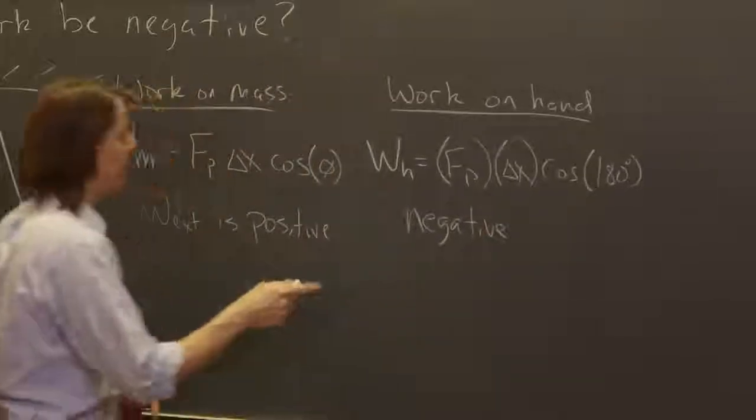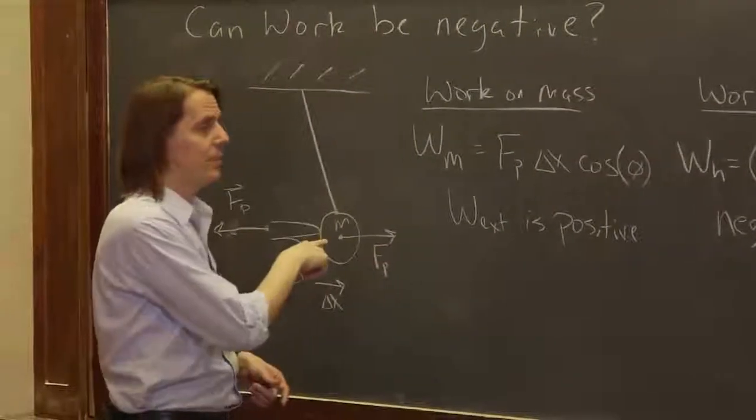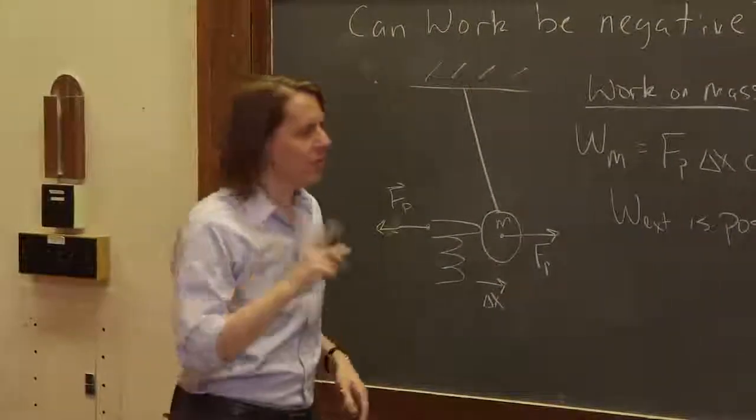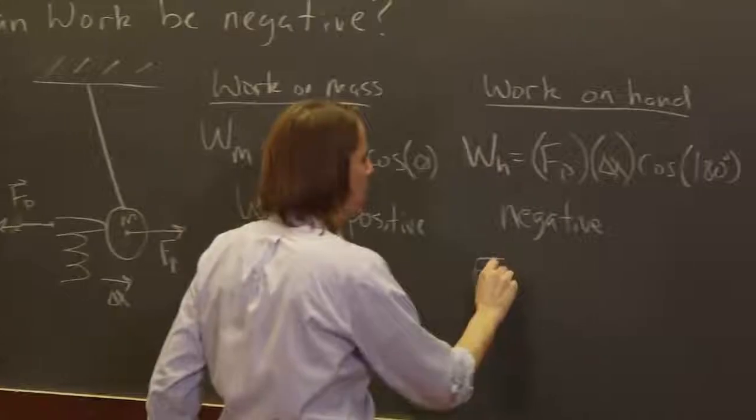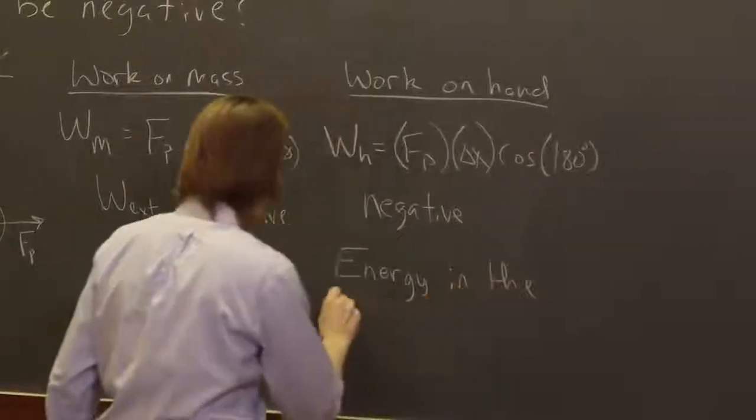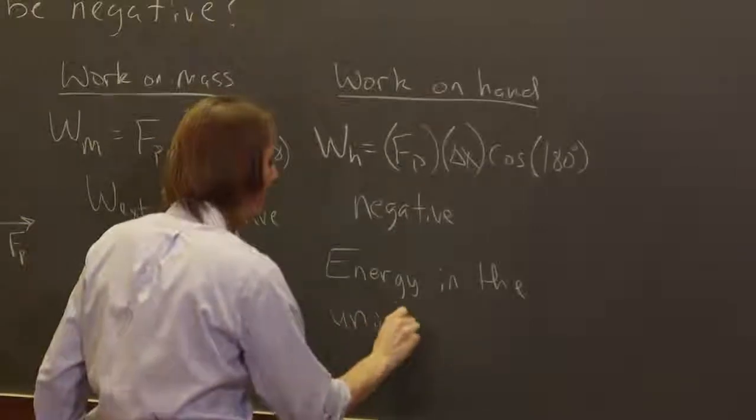And it's actually the same value as the external work that we did on the system. So what this is telling us is, yes, work can be negative. And it's also telling us that the energy in the universe is conserved.